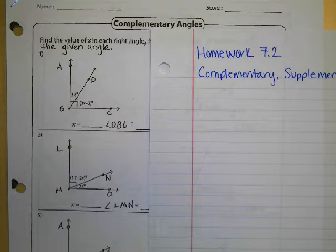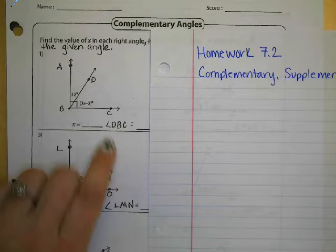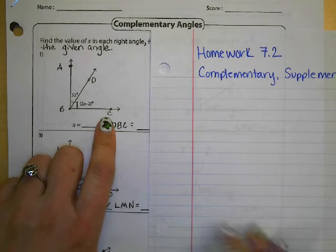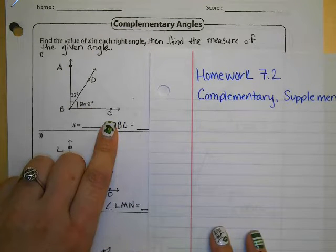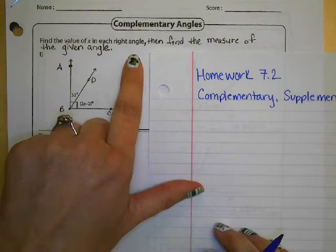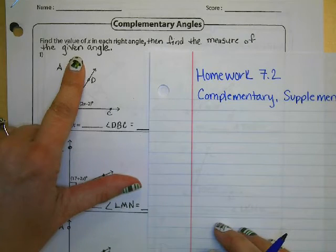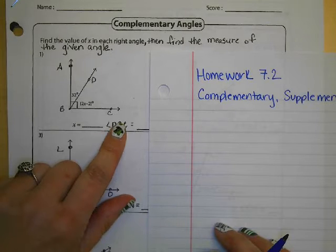Today's homework in lesson 7.2 is on complementary, supplementary, and intersecting lines. We're going to work through a couple of the problems from the homework just to give you some examples. Looking at number one on the first page where it says complementary angles, we are going to be finding the value of x in each of the right triangles, then find the measure of the given angle. So there's two things we're doing: finding x and then finding the angle.